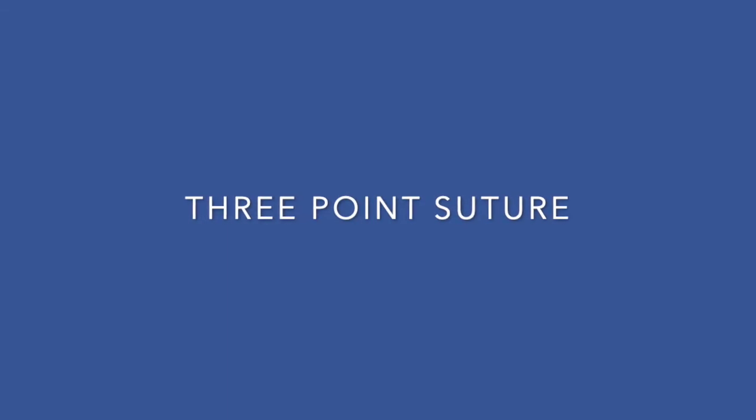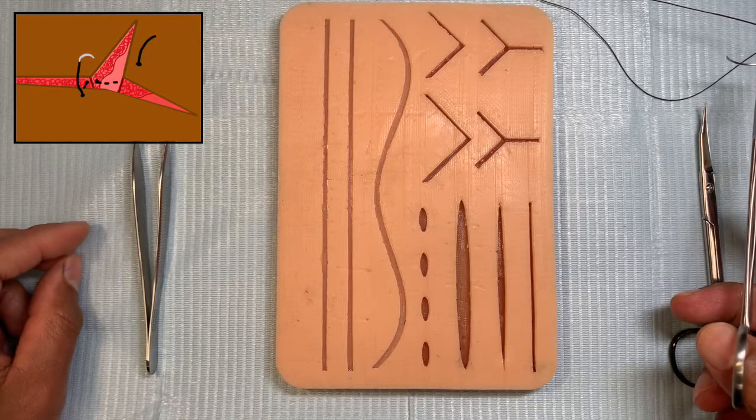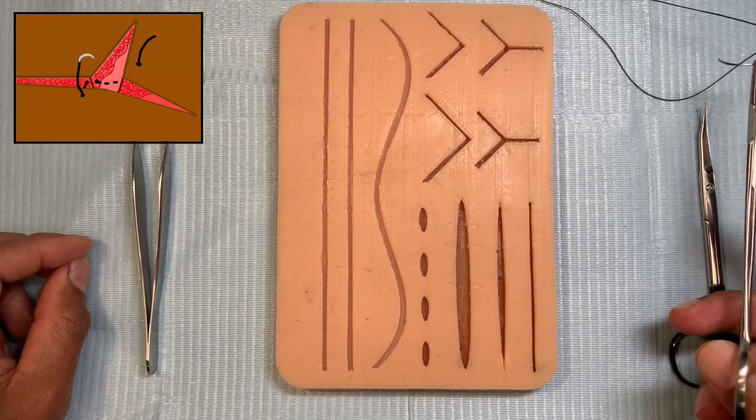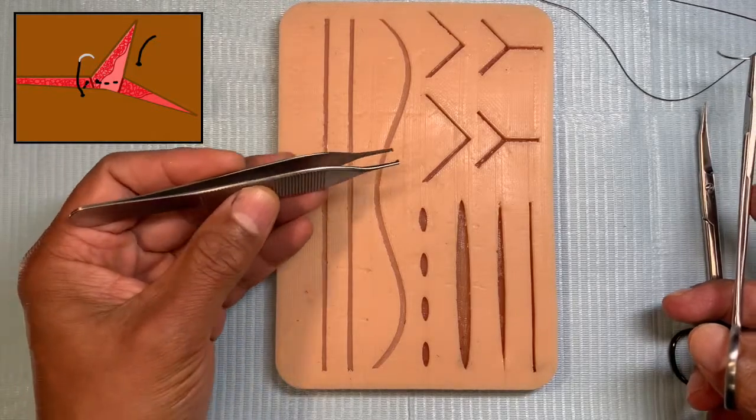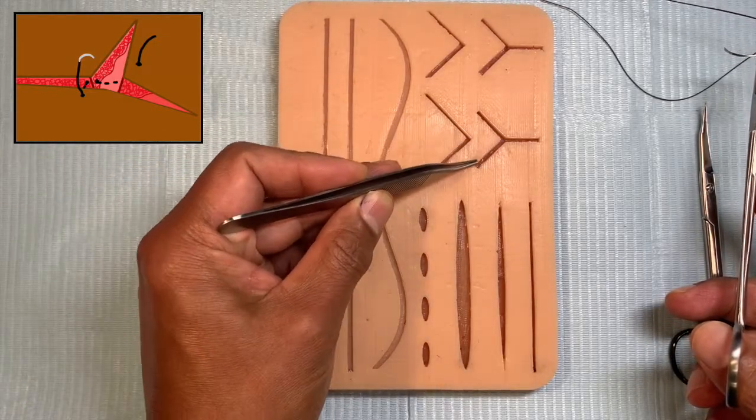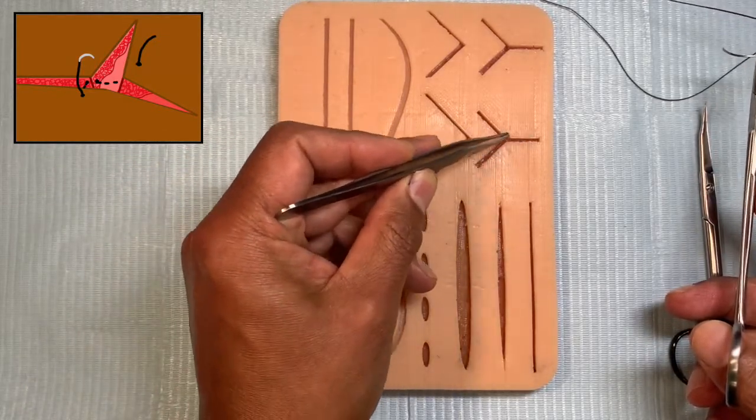This video is about the three-point suture. Wounds don't happen in a linear manner very frequently and you have got sort of junctions. So you can see in this demonstration pad this is a three-point or there may be irregularities like these.